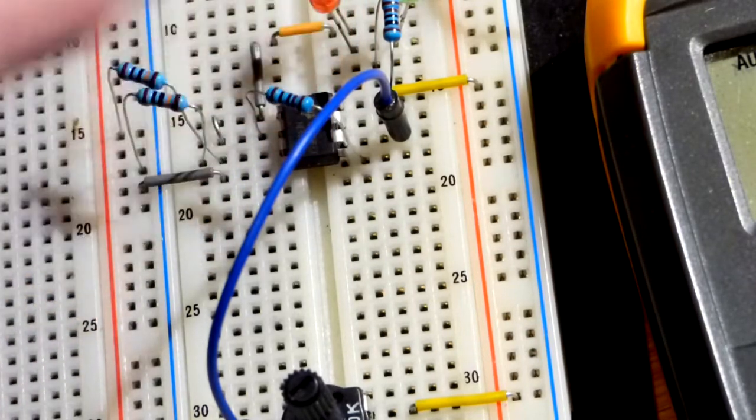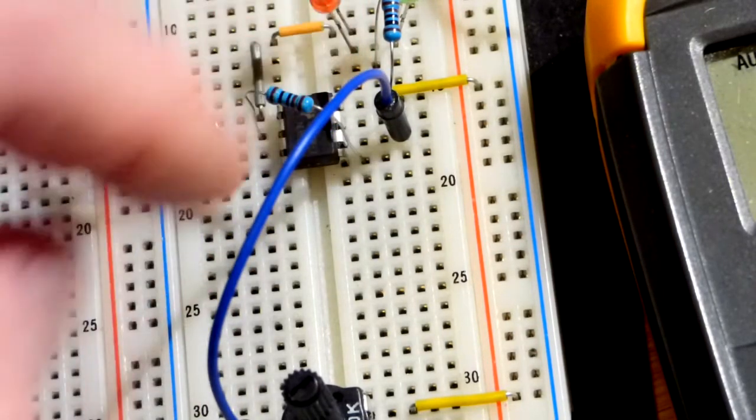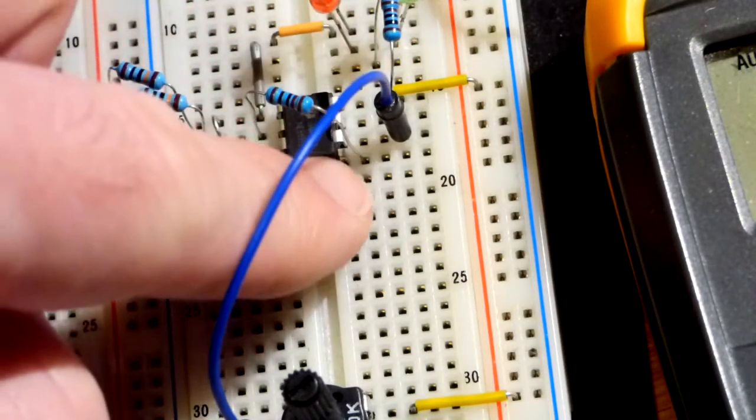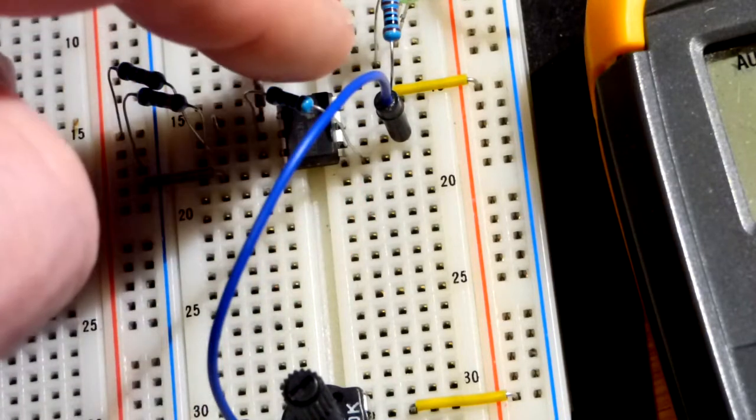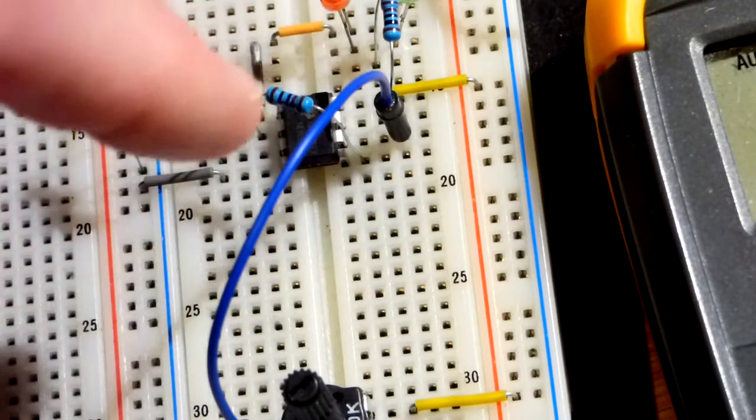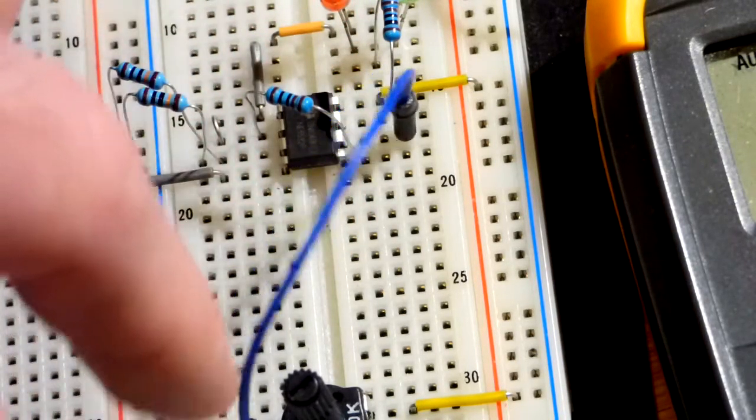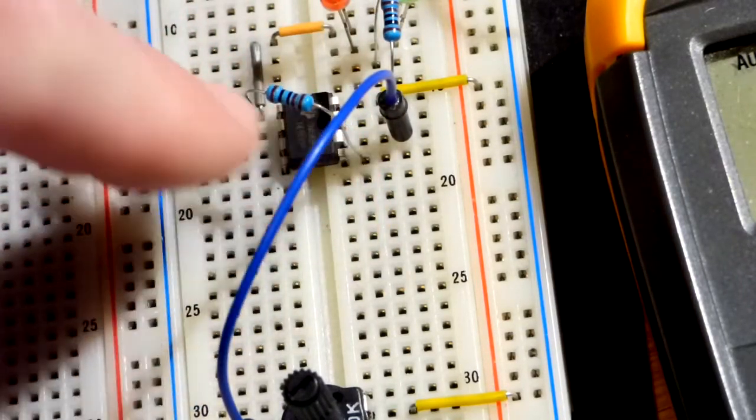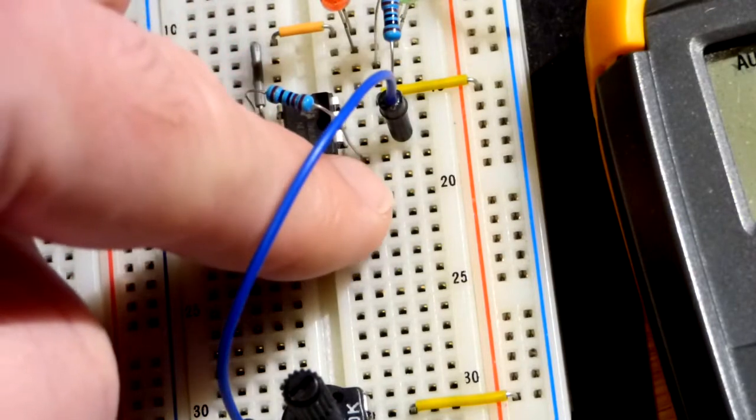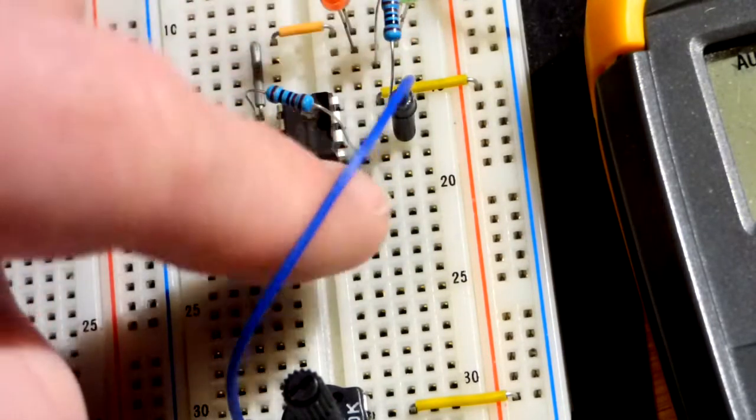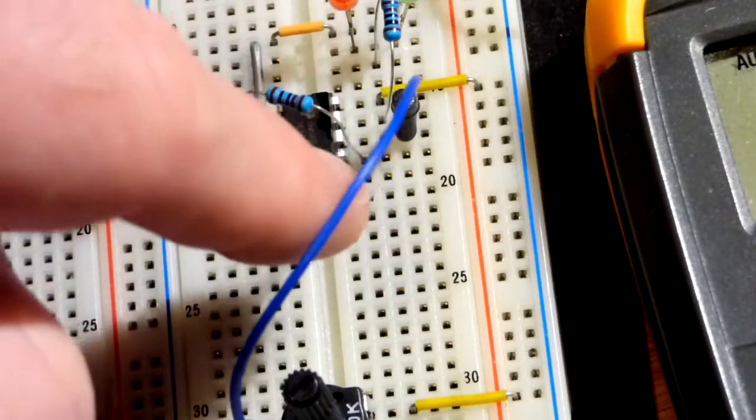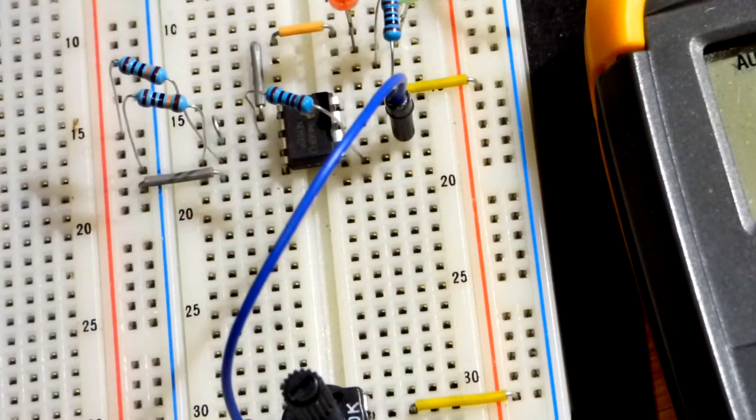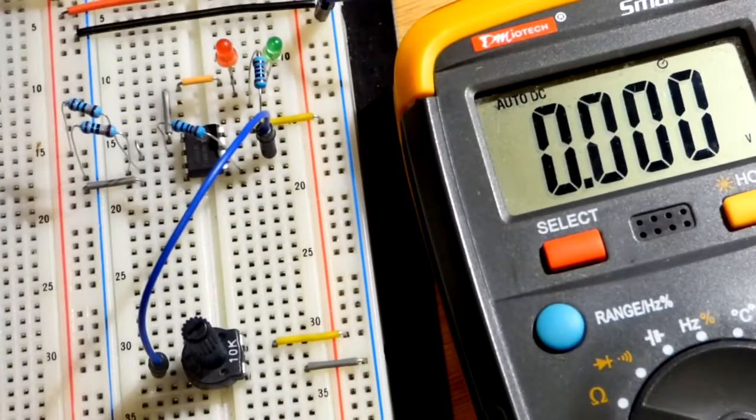So what that means is that when we have a lower signal at the inverting input than the non-inverting input, the output's going to want to go high. When we have a lower signal at the inverting input than the non-inverting input, which is zero volts right now with our virtual ground, when it is lower, the output's going to want to go high. When it's higher than our non-inverting input, it's going to want to go low. So we will see that right now.